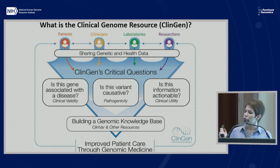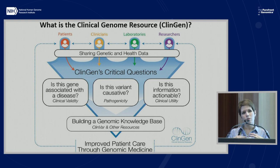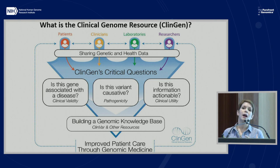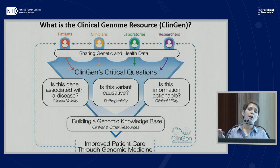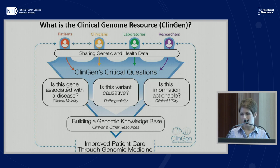Once this data is publicly available through resources such as ClinVar, we're able to use it to answer a number of critical curation questions: which genes are actually associated with disease, which variants are actually causing those diseases, and is any of this information medically actionable. Once we have answers to those questions, we put it back into the public domain — either through ClinVar itself or through our own website, clinicalgenome.org — trying to build a genomic knowledge base that anyone can access, and hopefully improving patient care through genomic medicine.